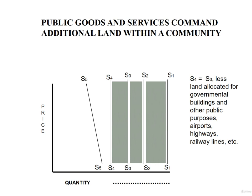Every community also allocates locations for governmental buildings and other public purposes — airports, highways, railway lines, and other public agency uses. Adding this amount of land to the total removed from supply brings us down to the supply curve S4. Thus, only half of the total supply of land is available for private development, for purchase and sale, or for lease under market conditions.